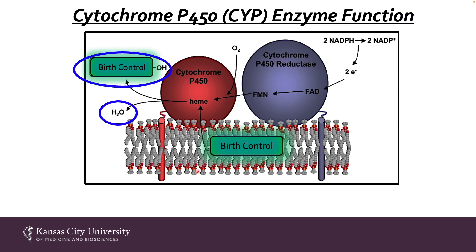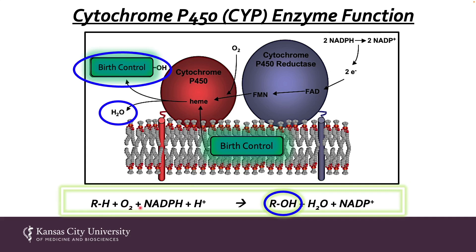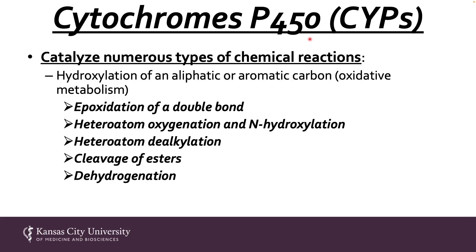That is how induction of cytochrome P450 increases the metabolism and decreases the effectiveness of the drug in our example. This process is also referred to as oxidative metabolism, and it is fundamental in the overall process called biotransformation. To summarize: an obligate pair of enzymes — cytochrome P450 reductase paired with cytochrome P450 — produces the hydroxylated form of birth control and water. Any drug combines with molecular oxygen and uses energy from NADPH to produce the hydroxylated form of the drug and water.